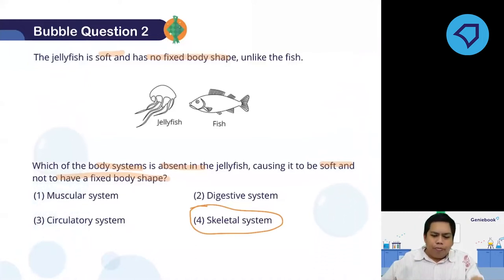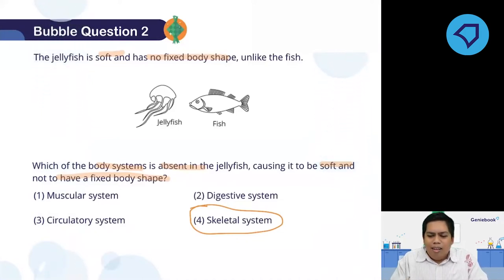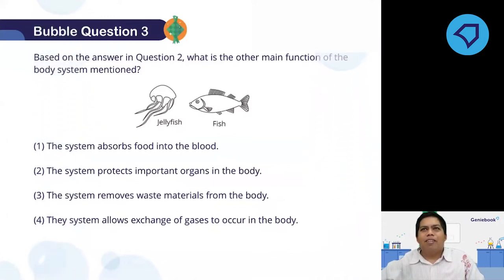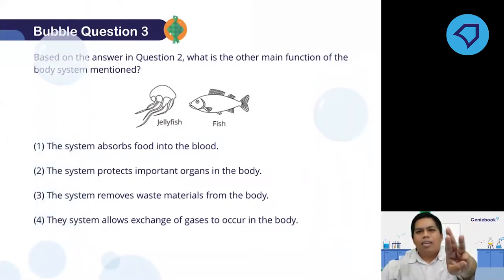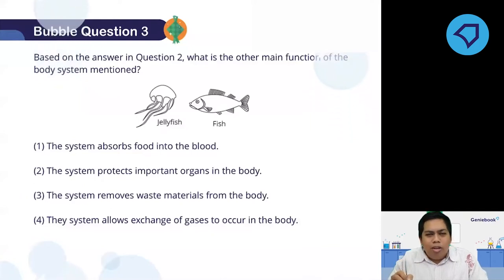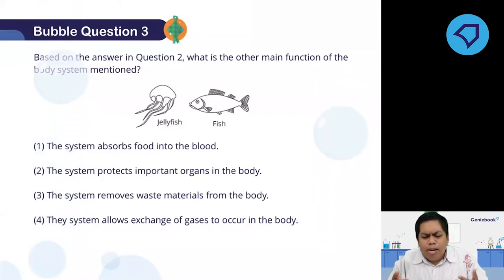Well done to those who got it correct. Remember, the skeletal system gives the body its shape — including ours. Let's move on to the next one. So about the same percentage correct as question two. For the skeletal system, the main function is to give the body shape and protect the important organs. Now let's go through the functions given here.